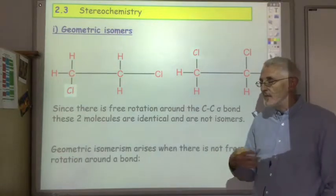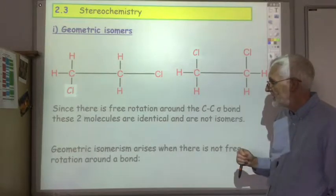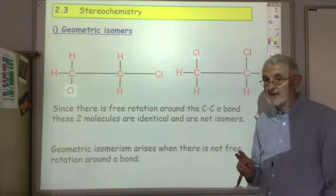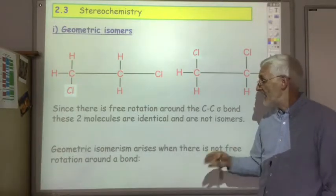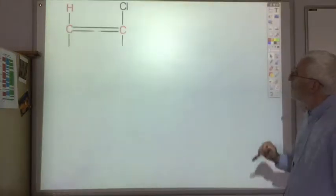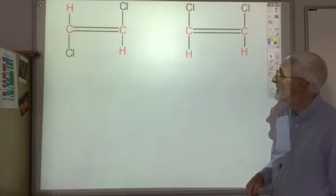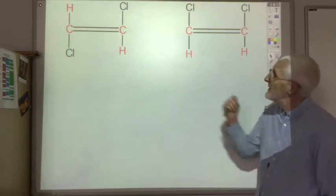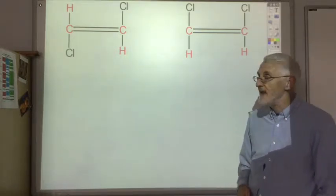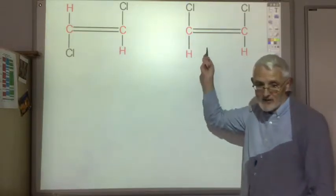However, if there's something in the structure that stops the free rotation then geometric isomerism can arise. There's two structural features that can stop free rotation. The first one is when there's a carbon-carbon double bond. So these are both molecules of 1,2-dichloroethene, but they're not the same—that cannot change into that.